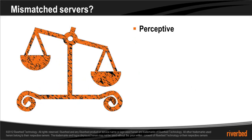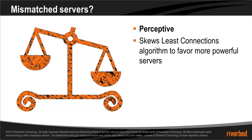If you have mismatched servers, or some servers are more powerful than others, the best algorithm to pick is perceptive. Perceptive skews the least connections algorithm to favor more powerful servers by factoring in response time. The more powerful servers will tend to respond quicker, giving them a faster response time and leading the perceptive algorithm to skew connections in their favor.